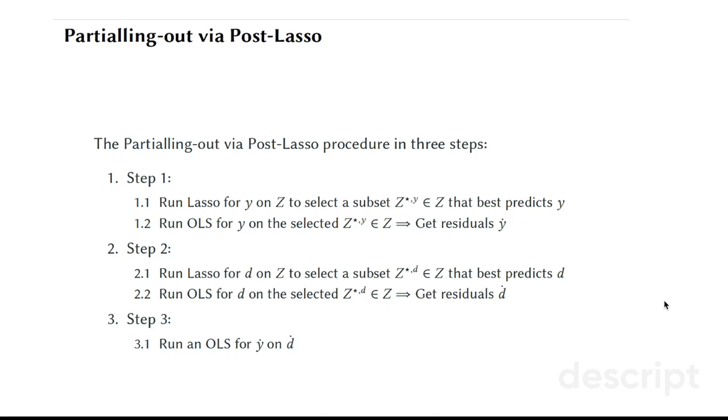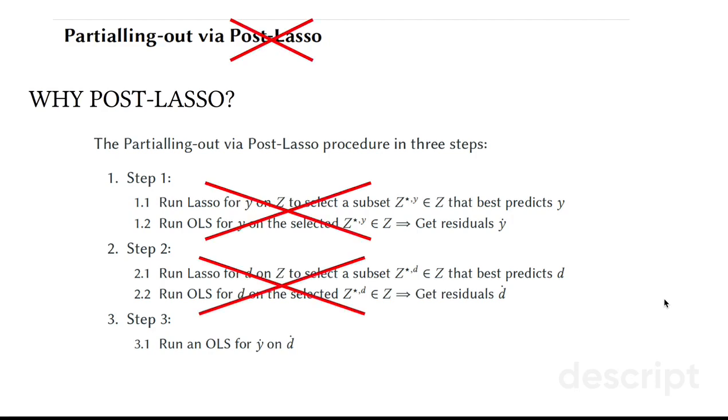So we talked about partialing out via post-lasso, but the legitimate question here is, why post-lasso? Why can't we use in step 1 and step 2 something else, like any machine learning algorithm, in order to get the prediction residuals, and then run analysis for prediction errors of y on the prediction errors of d?